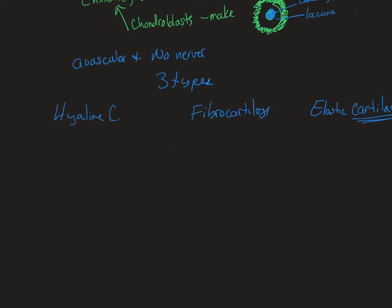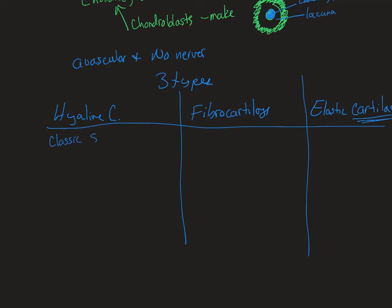Functionally, you need to know how each type is different. Hyaline cartilage is the classic structure dominated by a moderate amount of fibers and the gelatin. Its function is to resist tension and compression — the tension from the moderate number of collagen fibers, and the compression from the gel.